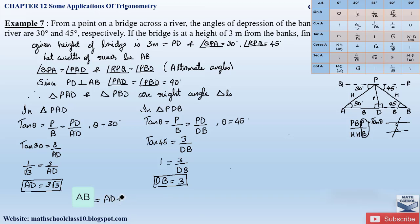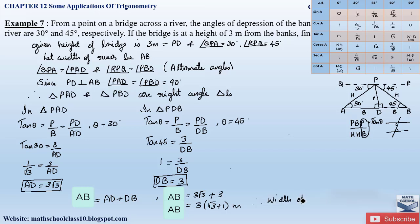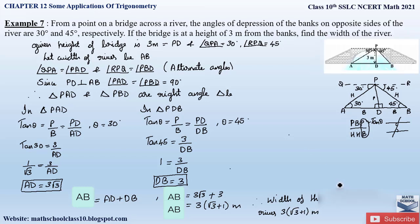The width of the river is AB. From the figure, AB = AD + DB. We found AD = 3√3 and DB = 3, so AB = 3√3 + 3. Taking 3 common, AB = 3(√3 + 1) meters. Therefore the width of the river is 3(√3 + 1) meters. This is how we solve Example 7.